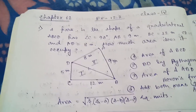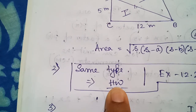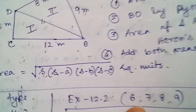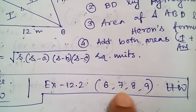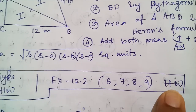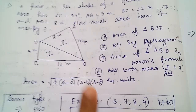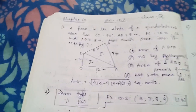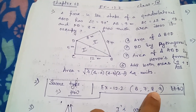Moving on to question number two — it is quite the same type, so I have given it as homework. Along with question number two, Exercise 12.2 questions six, seven, eight, and nine will also be your homework. The questions I'm doing here will be completed in your classwork copy, but these five questions are to be completed in your homework copy.